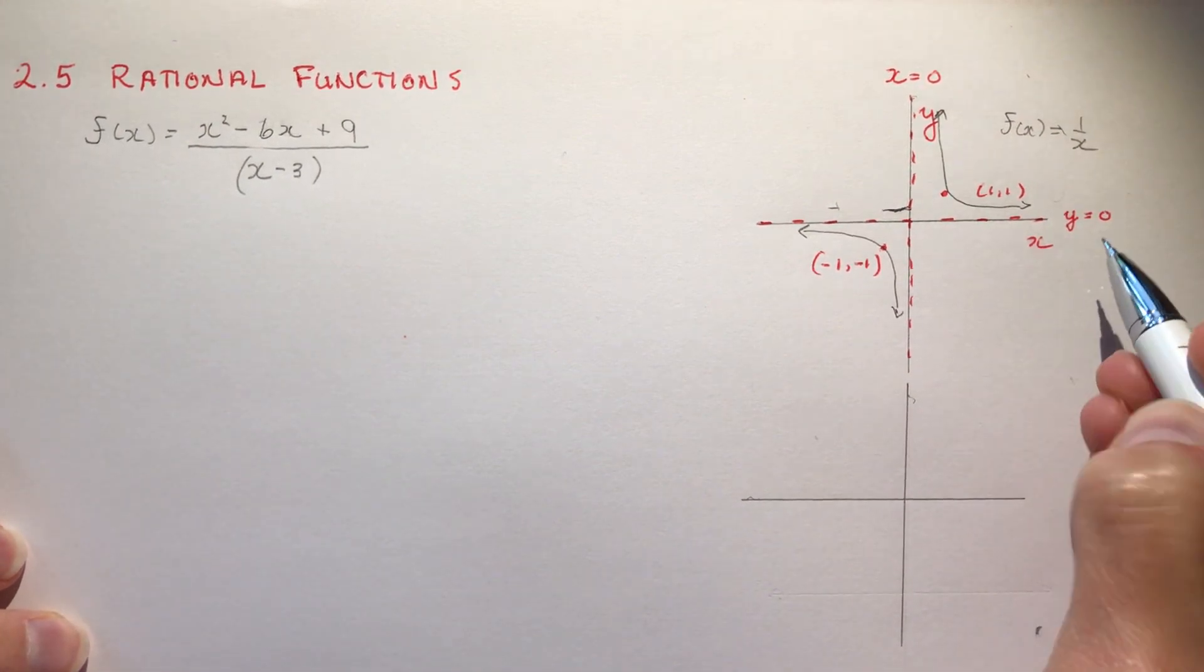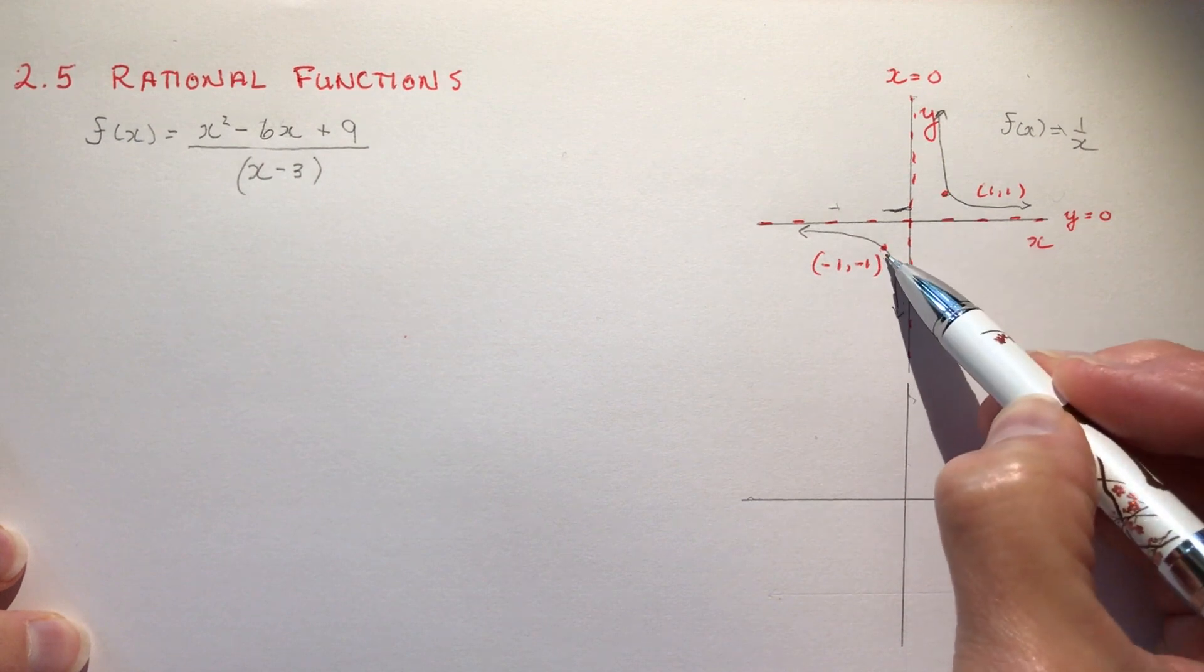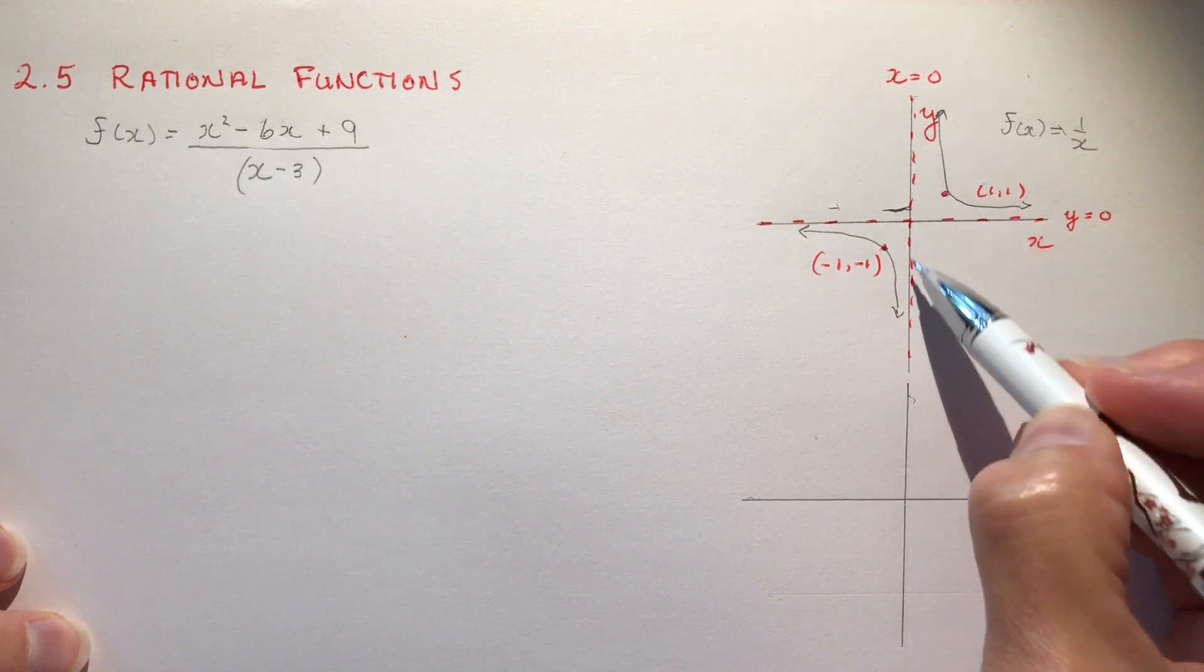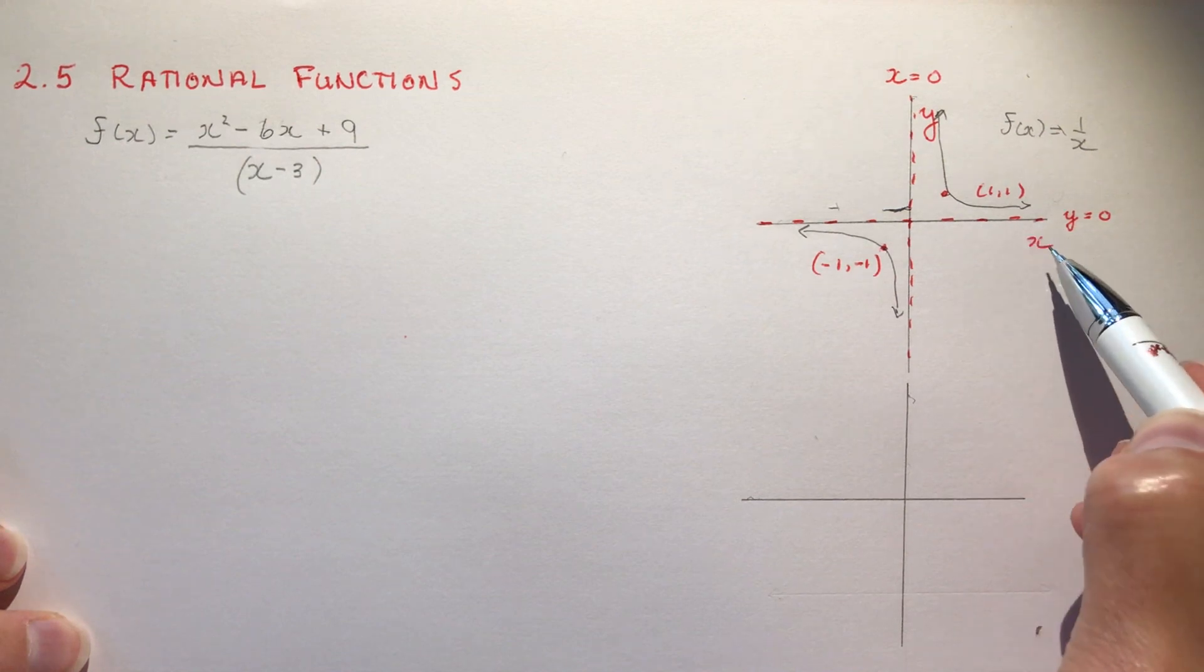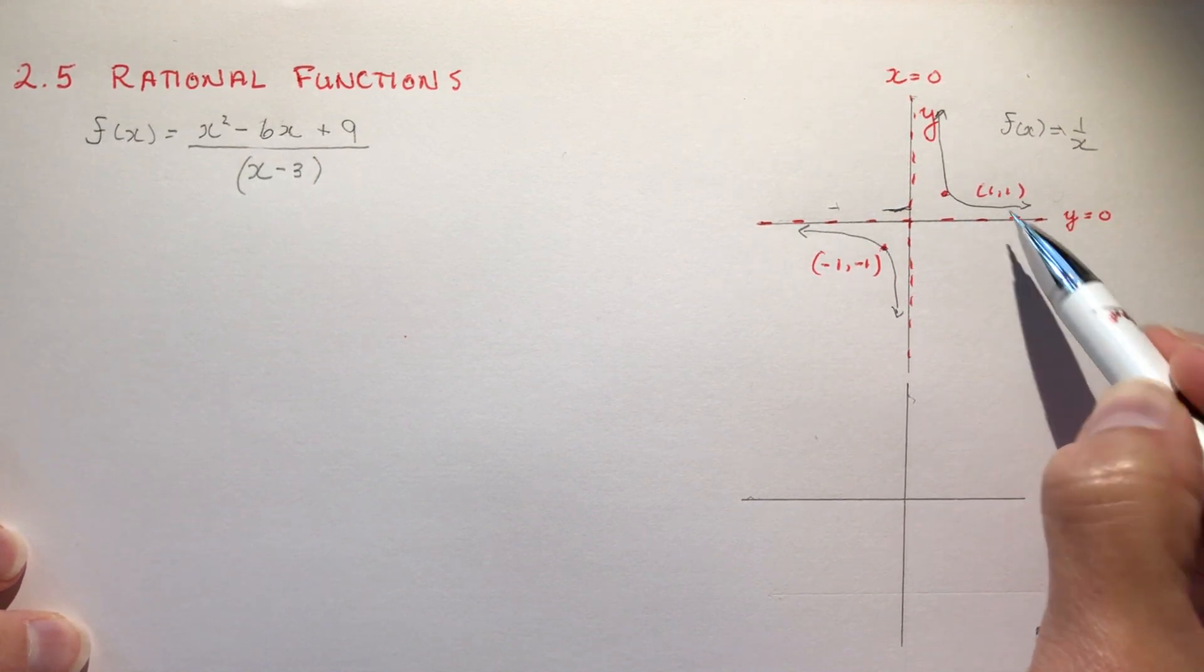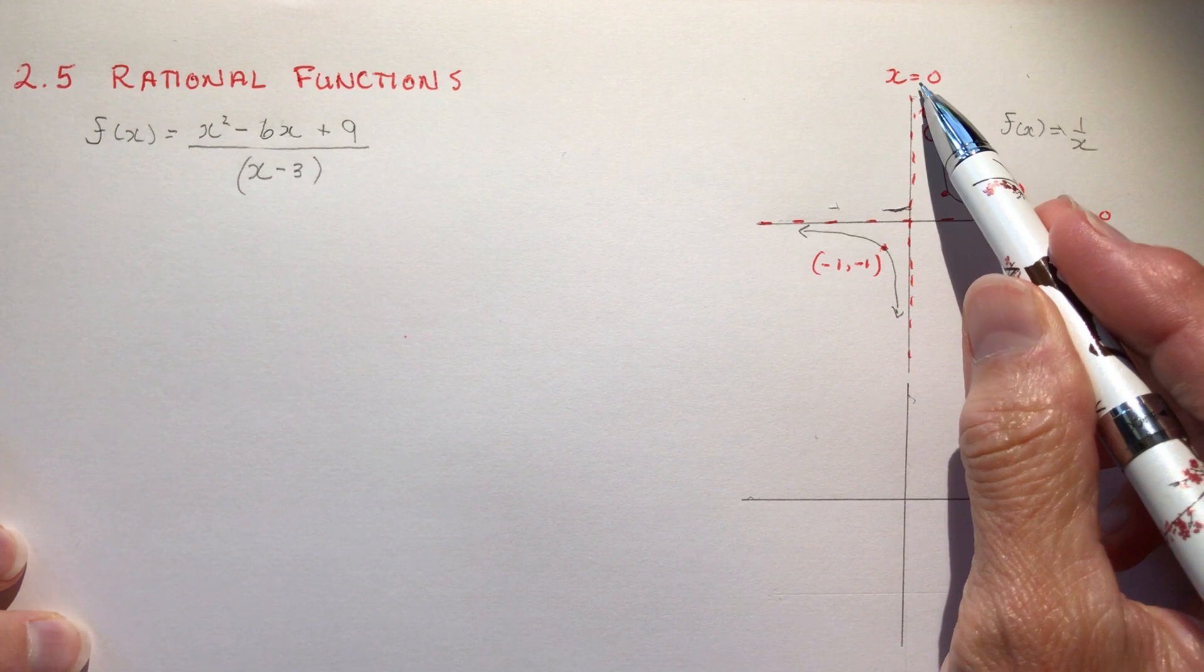Quick review: they have two very key points (1,1) and (-1,-1) and they have two asymptotes. The line y equals 0, remember that is the x-axis, and the line x equals 0.